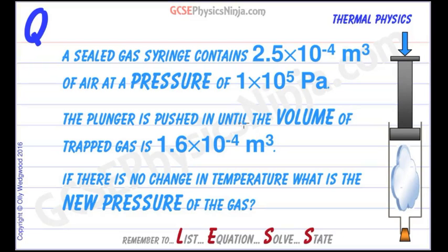A sealed gas syringe contains 2.5 times 10 to the power of minus 4 meters cubed of air at a pressure of 1 times 10 to the 5 pascals. The plunger is pushed in until the volume of the trapped gas is 1.6 times 10 to the power of minus 4 meters cubed. If there is no change in temperature, what is the new pressure of the gas? We're going to use the list-equation-solve-state structure to work through this calculation.